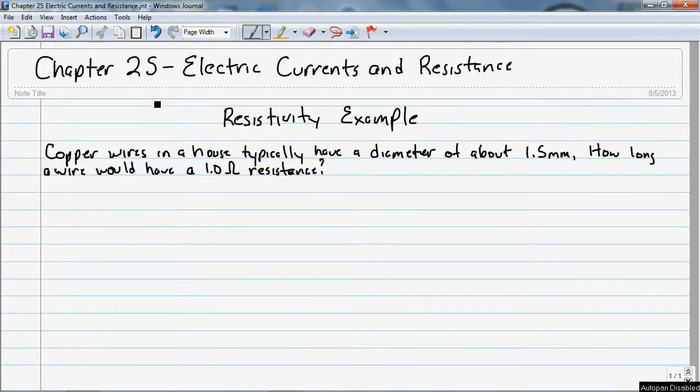Let's do a quick example using resistivity. We have copper wires in a house typically have a diameter of 1.5 millimeters.